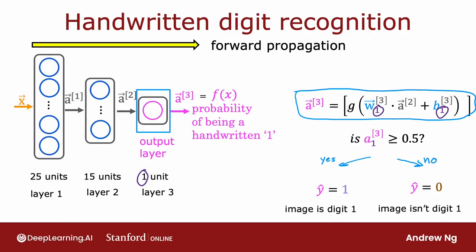And by the way, this type of neural network architecture, where you have more hidden units initially, and then the number of hidden units decreases as you get closer to the output layer, that's also a pretty typical choice when choosing neural network architectures. And you see more examples of this in the practice lab as well.